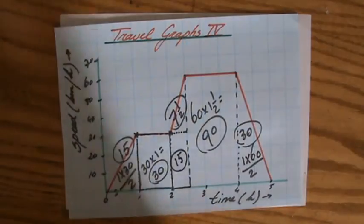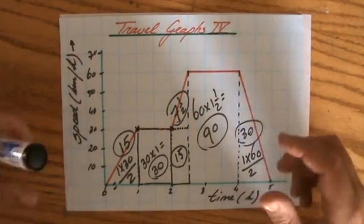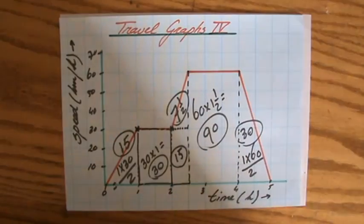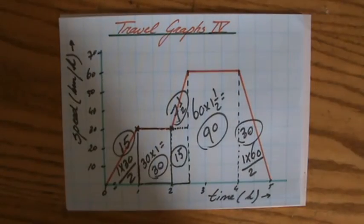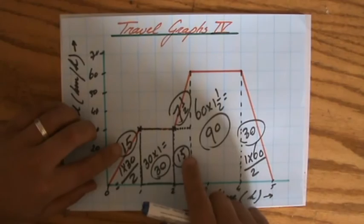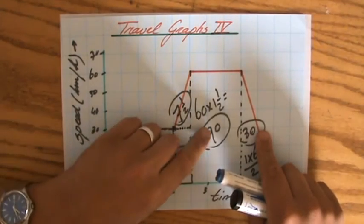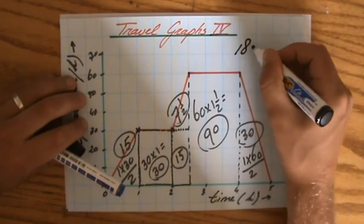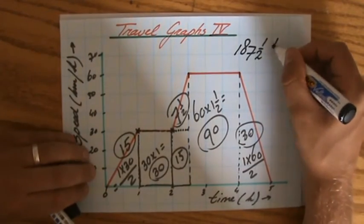So I have all those individual pieces of distance driven by this vehicle. So what is the total distance? What is the total area underneath my graph? That is the addition, the sum of those individual distances. So what is that? 30, 60, 90, 180, 187.5 kilometers.